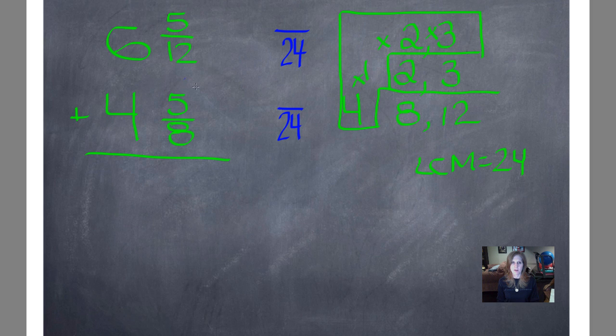I may not have left myself very much space. What do I do to 12 to get 24 times 2? So, 5 times 2 is 10. What do I do to 8 to get 24? So, 5 times 3 is 15. Now, I can add these together. If I add, well, let's go ahead and put our whole number here because I do not want to forget to add my whole number because that's a lot of pieces of paper that would get left out if I didn't add those whole numbers in.